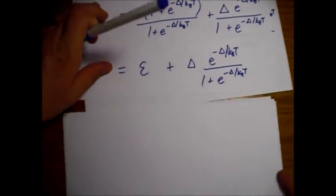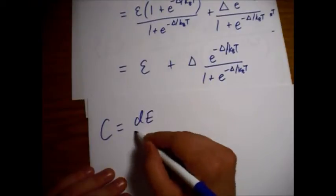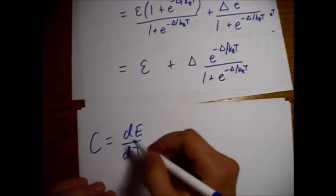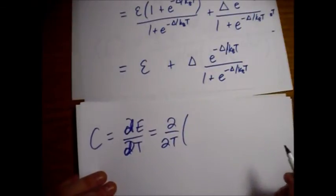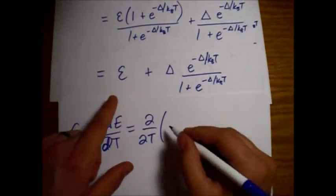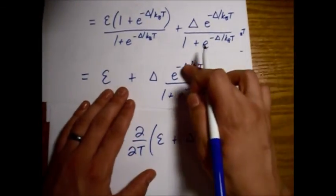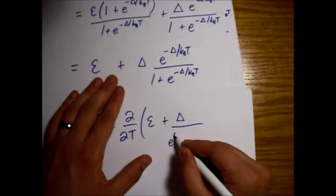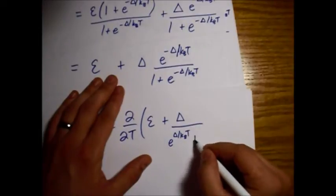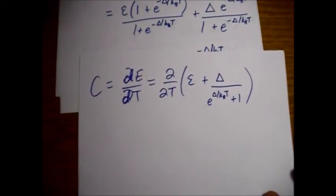So, to find the heat capacity, we need to take the derivative of the energy with respect to the temperature. Make this a partial derivative. So, I'm going to change this real quick, a little bit. So what I'm going to just do is multiply top and bottom by e to the plus of this exponent. So then we get a one on top, and then we get e to the delta over kBT plus one. Now, I think that'll make it a little bit simpler when we go to the differentiation.